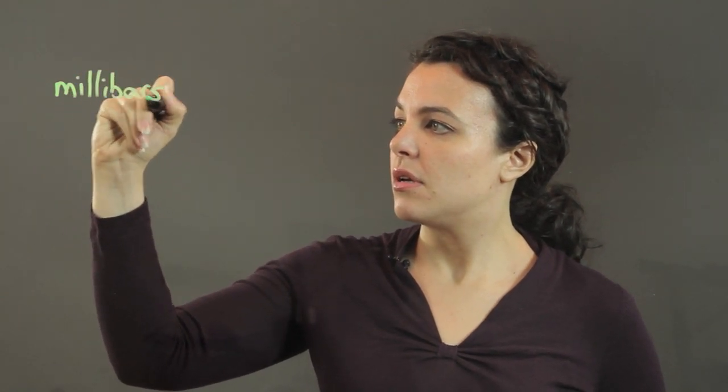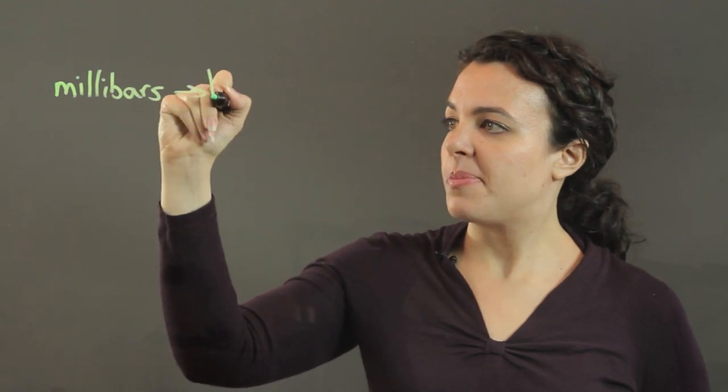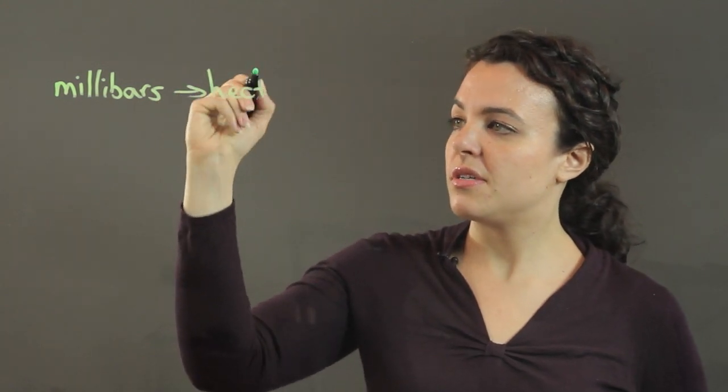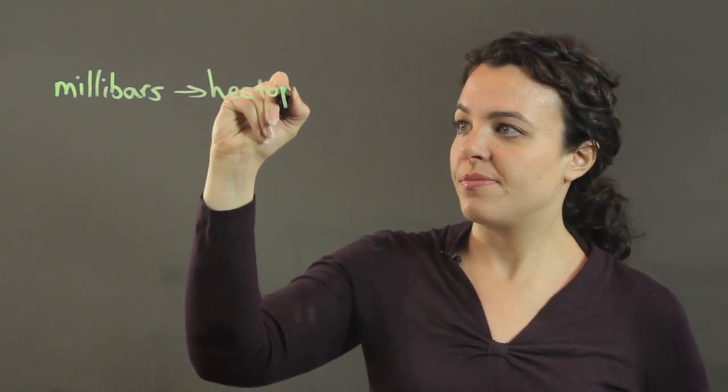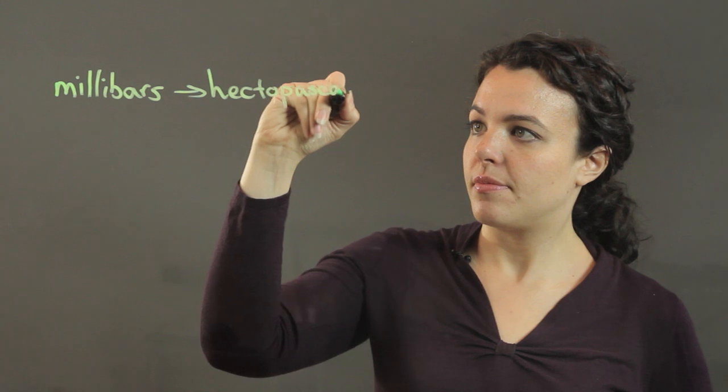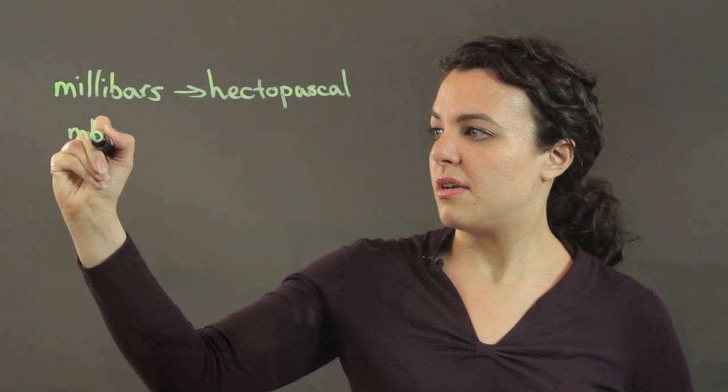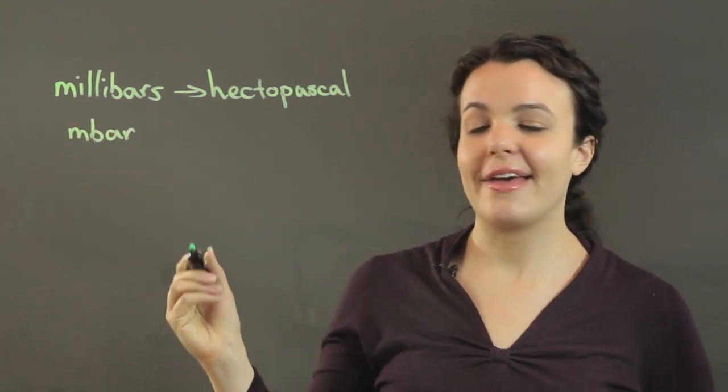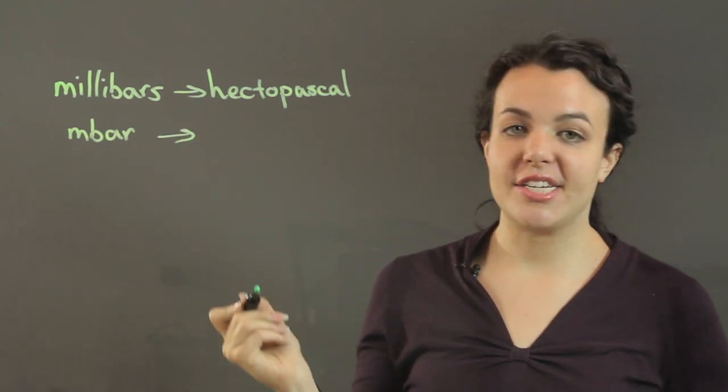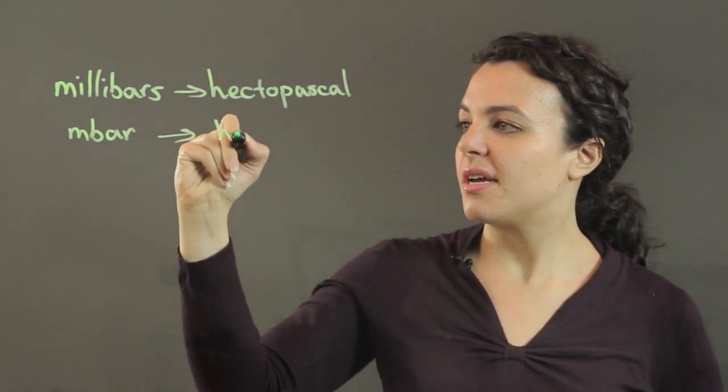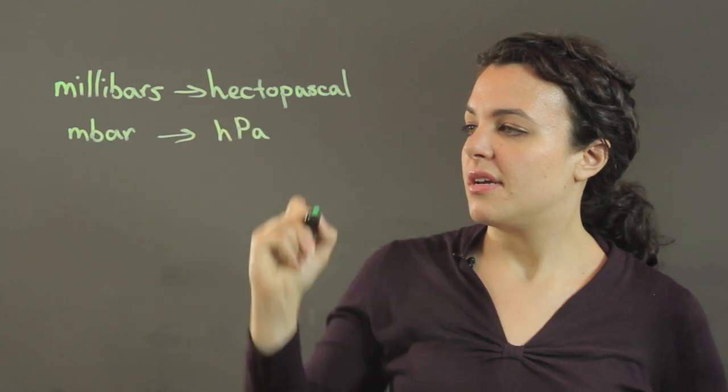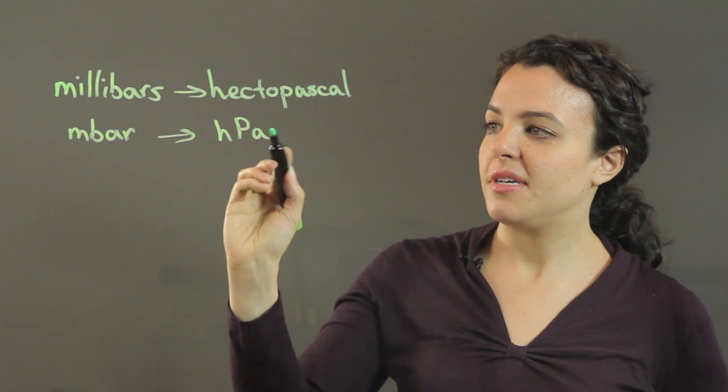So we're going from millibars to hectopascals. These are both units of pressure, and the millibar can just be written as mbar, like that, and hectopascal can be written as H capital P lowercase a.